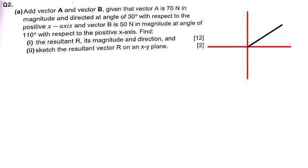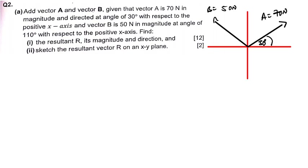That is my vector A, equal to 70 newtons, and the angle is 30 degrees. Next, vector B is 50 newtons at an angle of 110 degrees. 110 degrees is in the second quadrant, so I have to put it there. That's vector B, which is 50 newtons, at 110 degrees.